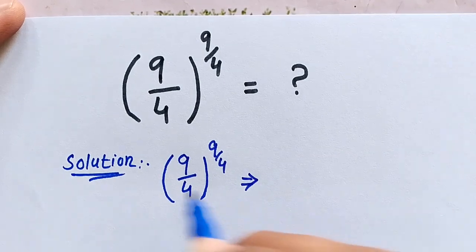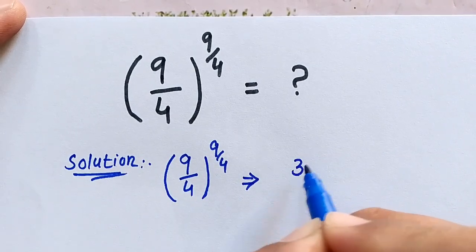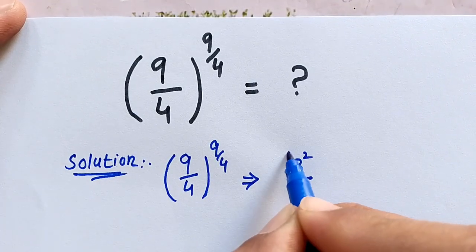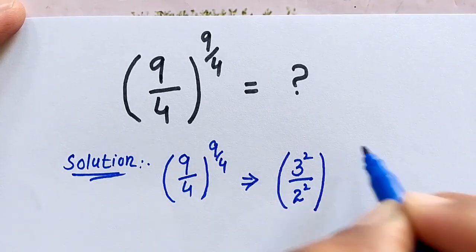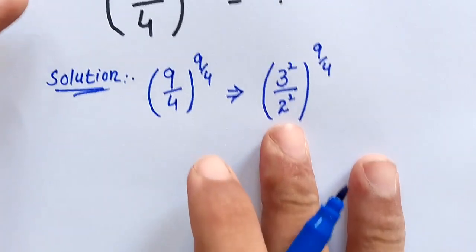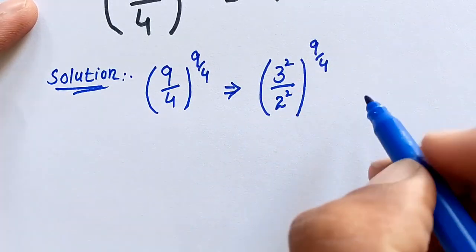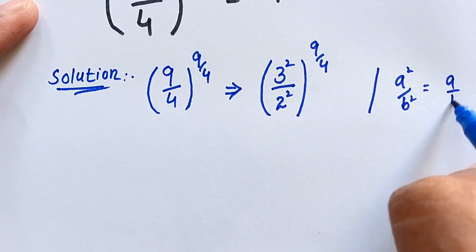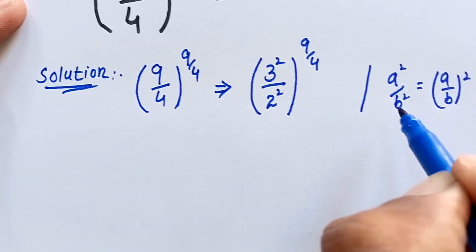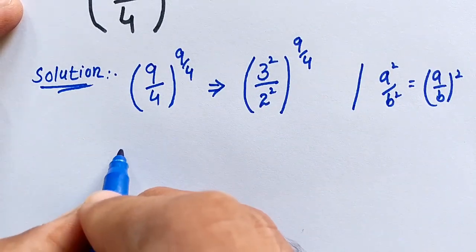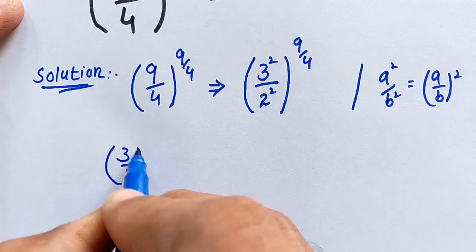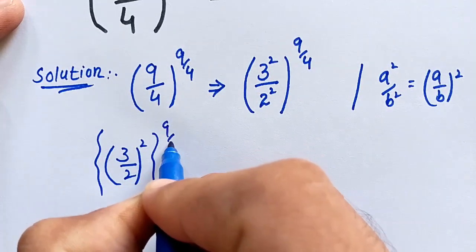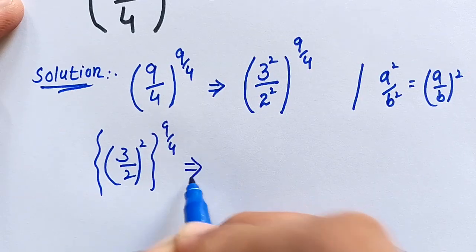We know that 9 is equal to 3 squared, and 4 is equal to 2 squared, with the power of 9 over 4. This is in the form of a² over b², which is equal to (a/b)², so we apply this condition. This becomes (3/2)² to the power of 9 over 4.